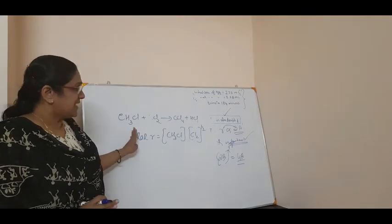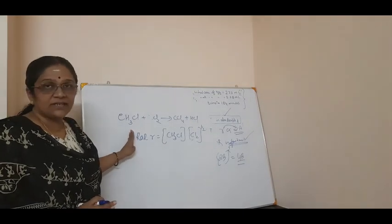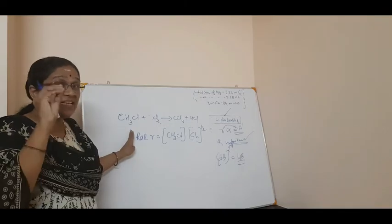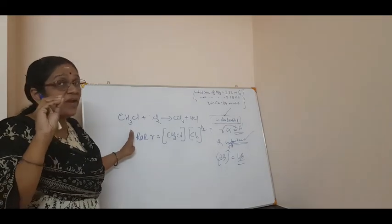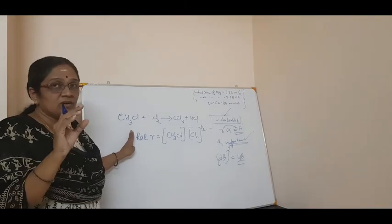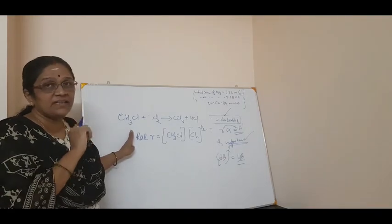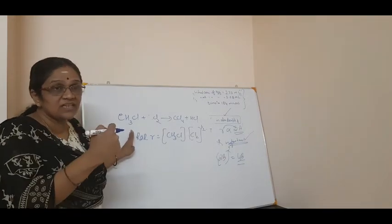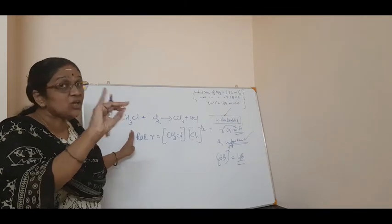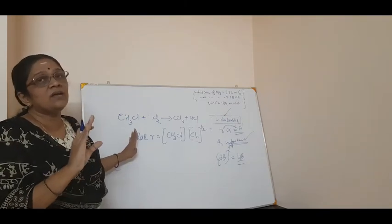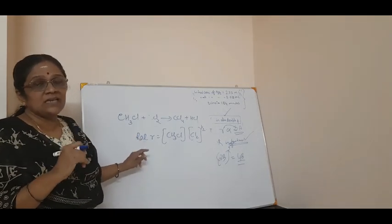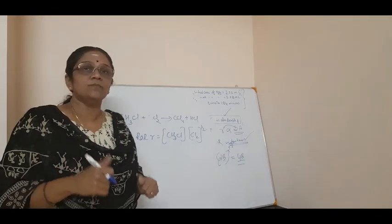Some examples are given in the textbook — there is one example given for NO₂. Please refer to that. They give the experimental data showing how the rate of reaction increases or decreases, and they give the rate equation. Please go through it. Any doubt, please clarify with me. Till then, keep studying. Thank you.